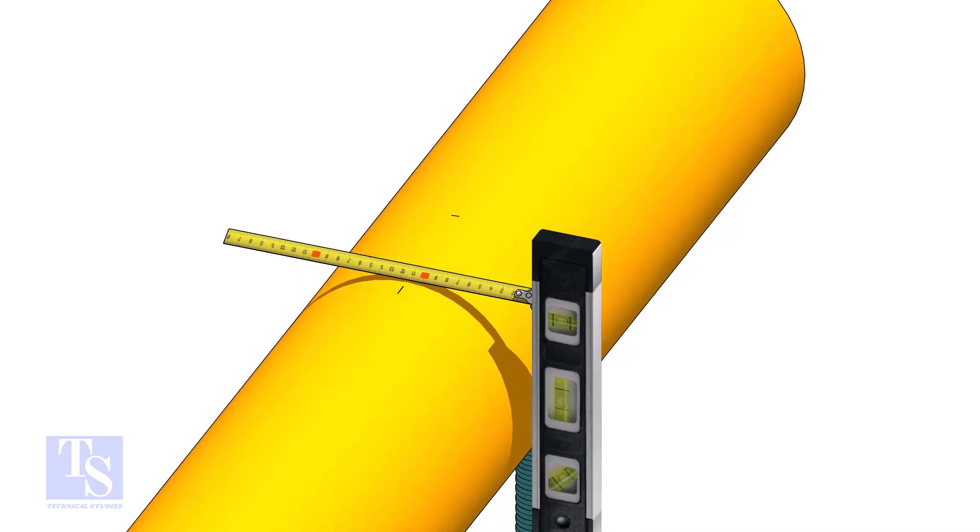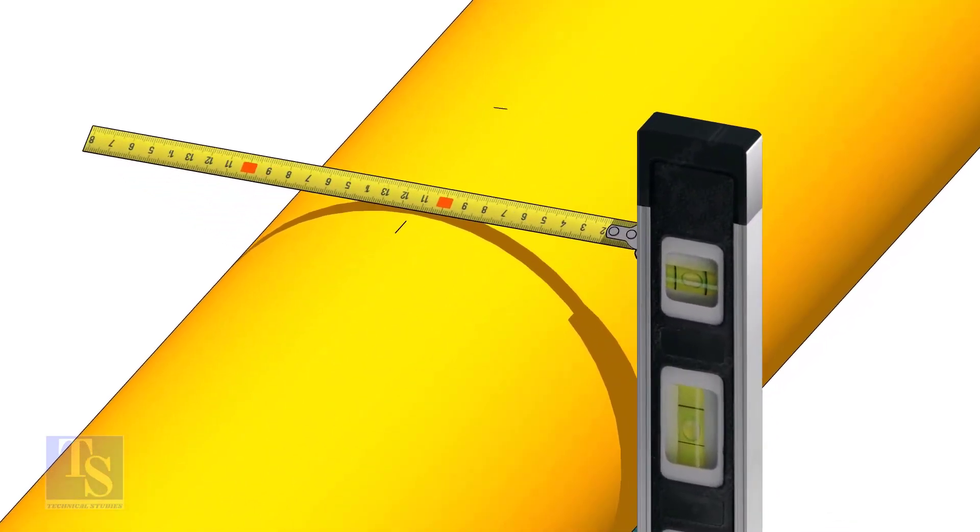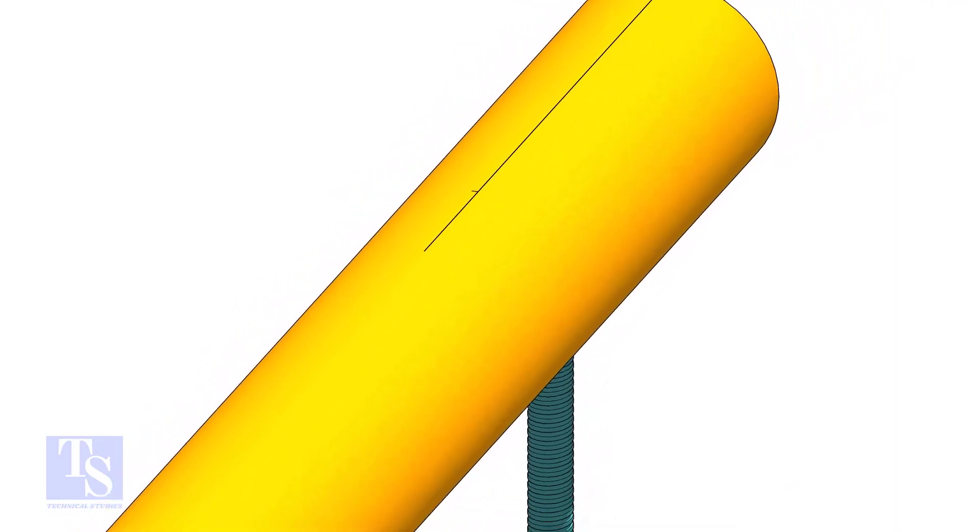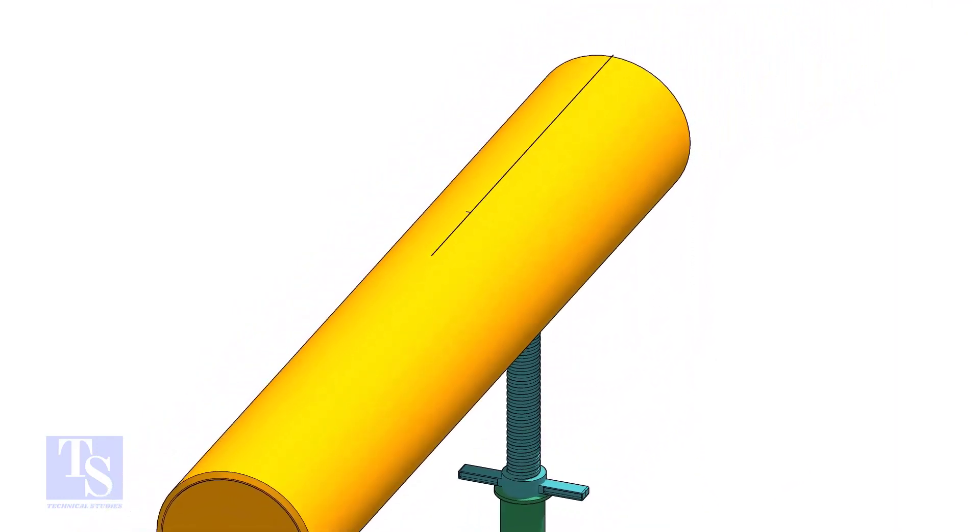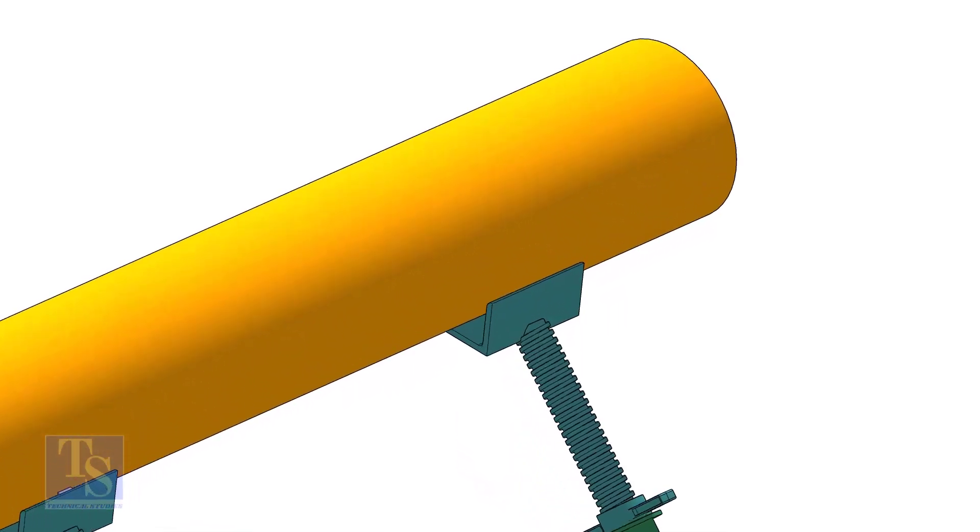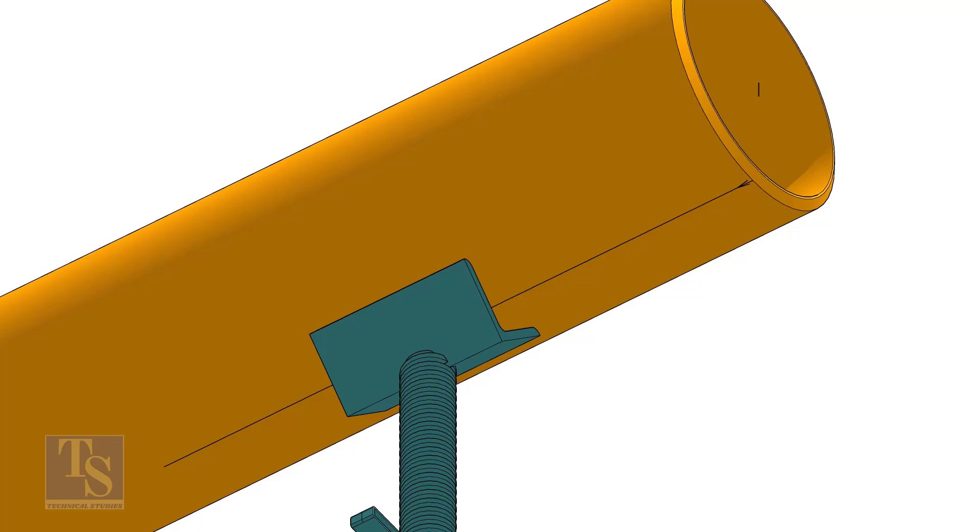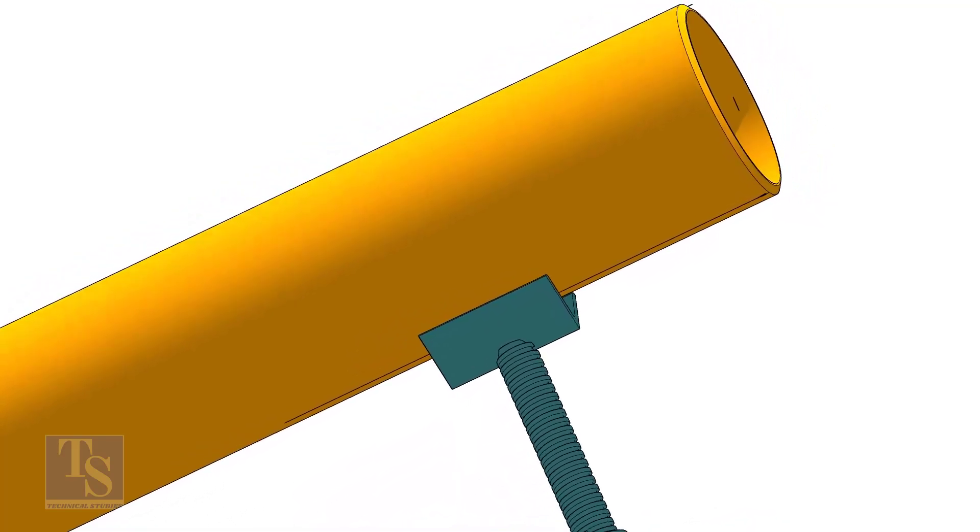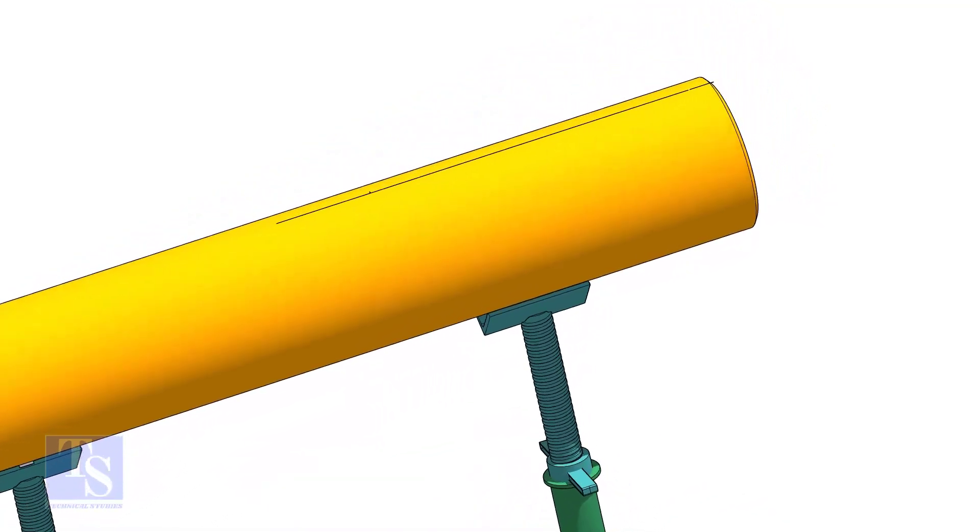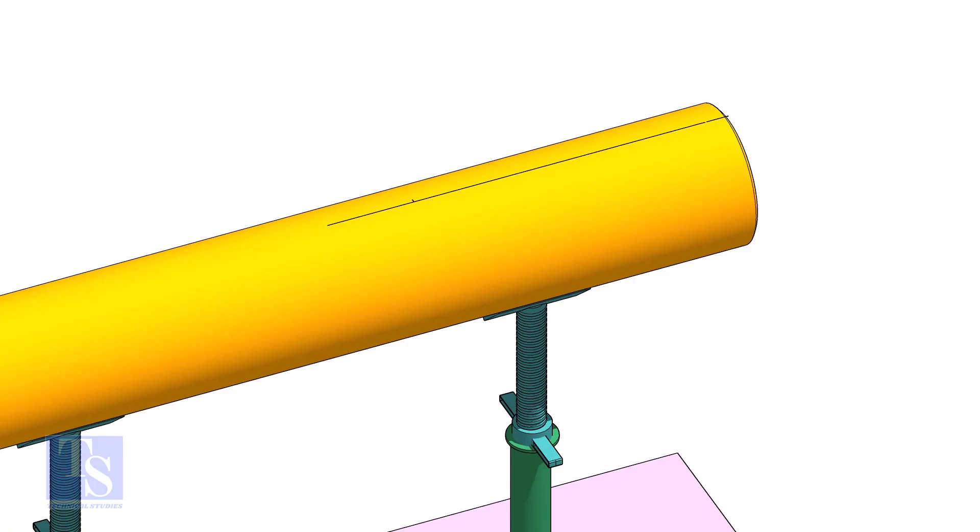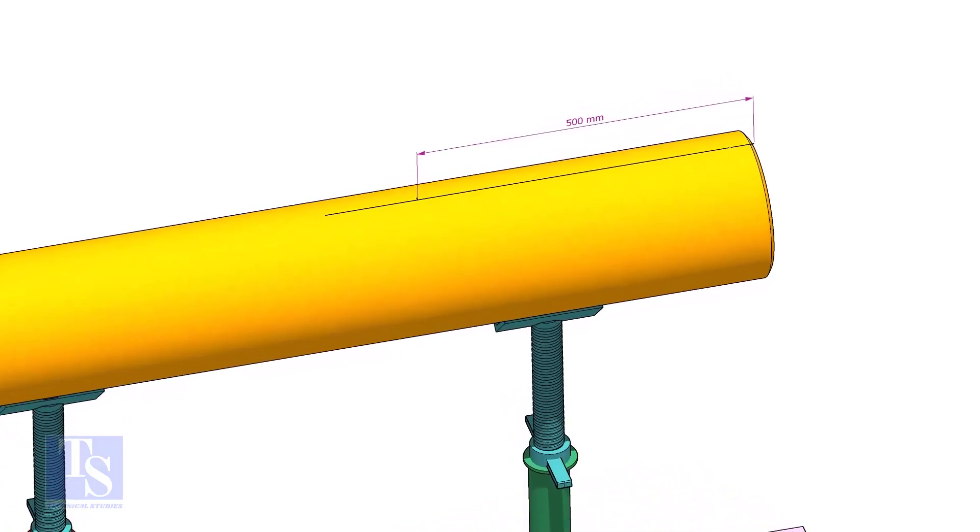Mark the center of the other end where you want the center line to be extended. Mark the center of the branch connection.